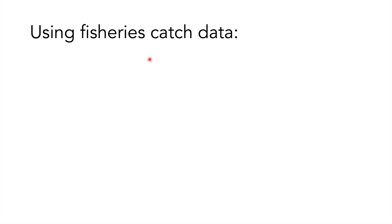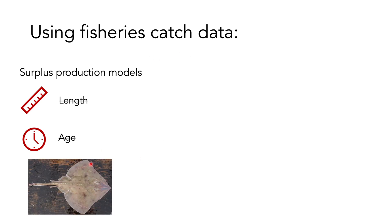If we are using catch data and have information on both the yield and the effort exerted by a fleet but we lack both age and length data of a stock, then a surplus production model is used. An example of this is the Aleutian skate fished in the Bering Sea.